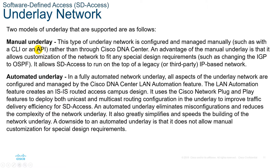There are two models for the underlay: manual and automated. For the manual underlay, this type of underlay network is configured and managed manually, such as with the CLI or the REST API, rather than through Cisco DNA Center. An advantage of the manual underlay is that it allows customization of the network to fit any special design requirements, such as changing the IGP to OSPF, and it allows SD-Access to run on top of a legacy or third-party IP-based network.